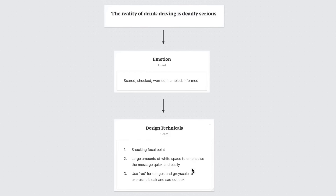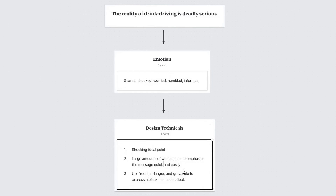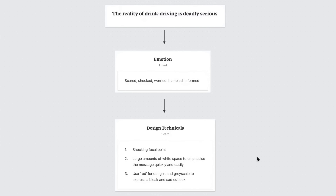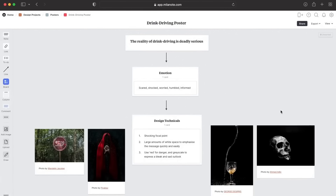I want a focal point that is shocking and draws the viewer in. I really want to emphasize white space to make the message clear and concise, giving a clinical or bleak outlook that drives home that drink driving can be bleak for those involved. Then I go into color schemes that might call the emotional responses I want to deliver, and lastly consider imagery to help build up an overall density of design ideas.